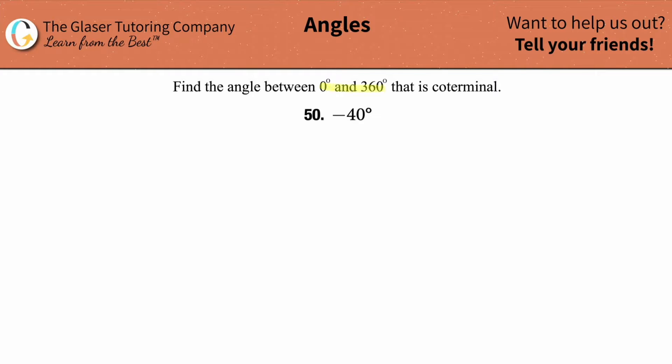Find the angle between 0 and 360 degrees that is coterminal to negative 40 degrees. So the first thing is, in order to answer this, we first have to graph negative 40 degrees.